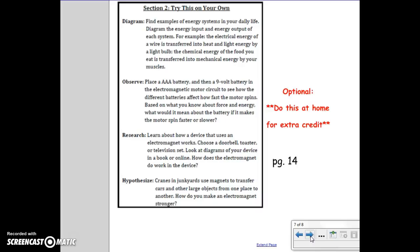Section 2, try this on your own. This is optional extra credit. This you would do at home. Diagram: Find examples of energy systems in your daily life. Diagram the energy input and energy output of each system. For example, the electrical energy of a wire is transferred into heat and light energy by a light bulb. The chemical energy of the food you eat is transferred into mechanical energy by your muscles.